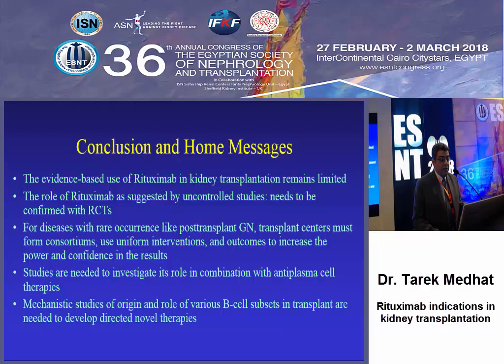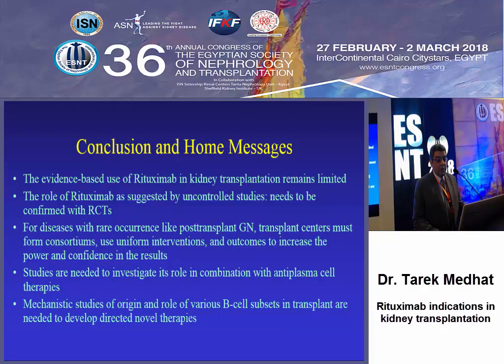In conclusion, the evidence base for the use of rituximab in kidney transplantation across all the previous indications remains limited. The role of rituximab is suggested by uncontrolled studies and needs to be confirmed by randomized controlled trials. For diseases with rare occurrence like post-transplant glomerulonephritis, transplant centers must form consortia and use uniform outcomes and interventions to increase the power of results. Studies are needed to investigate its role in combination with novel therapies targeting plasma cells and various B cell subsets. Finally, I would like to invite you to submit your article online to our peer-reviewed journal of transplantation. Thank you.